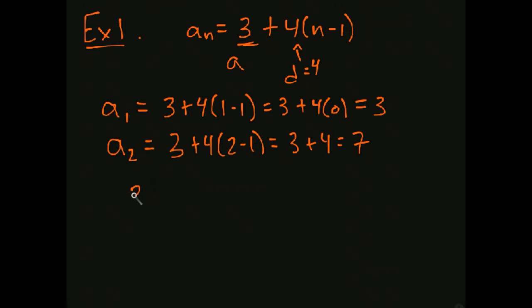So our first five terms, 3, 7, if we understand now that our common difference is 4, we just add 4. So 11, 15, 19, etc. And the common difference is 4.